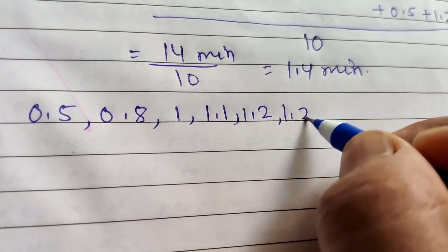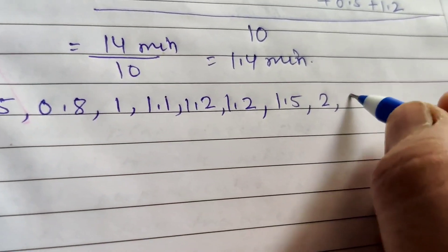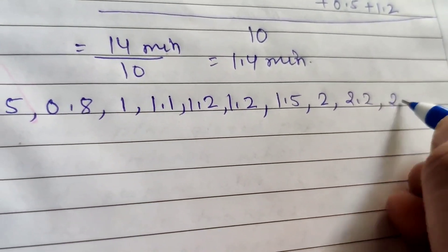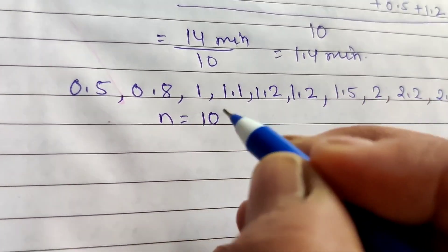Now total number of terms are 10. Then the median, when n is even, equals n/2 term plus (n/2 + 1) term divided by 2.